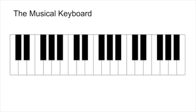When you look at a musical keyboard, there's a clear organization to what you're seeing. The basic way that it's organized is in terms of white keys and black keys — that's the first thing you should identify. But if you look a little bit closer, you'll actually notice that the black keys have a pattern to them.